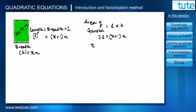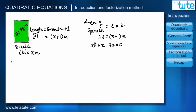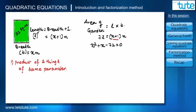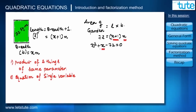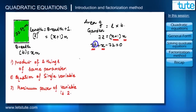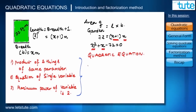On calculating and rearranging we get x² + x − 72 = 0. Looking at this equation we can say three things: number one, we got this equation when we took the product of two things of the same parameter — both length and breadth are distances measured in meters. Number two, this is a single-variable equation with only x. Number three, the maximum power of the variable is two. When an equation satisfies these three things, it is called a quadratic equation.